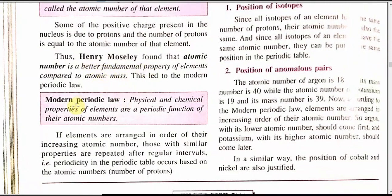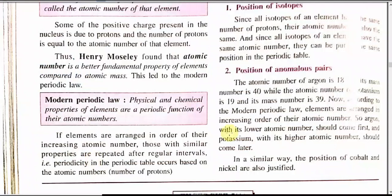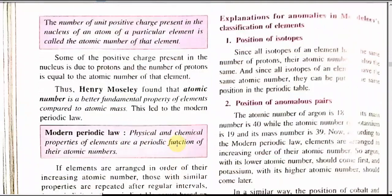The number of unit positive charges present in the nucleus of an atom of a particular element is called the atomic number of that element. Thus, Henry Moseley found that atomic number is a better fundamental property compared to atomic mass.